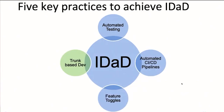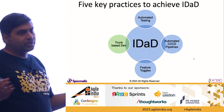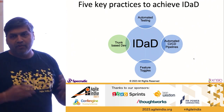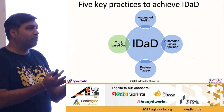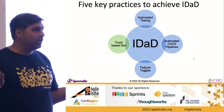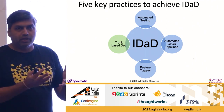Trunk-based development and feature toggles generally go very much hand-in-hand. The idea here is that instead of using something like Git flow or whatever, you essentially work off one branch — all developers work off one branch.